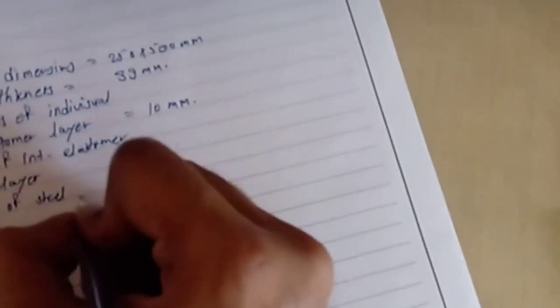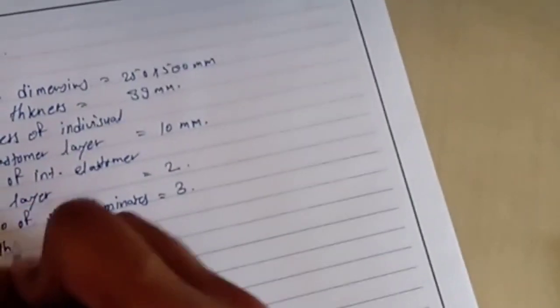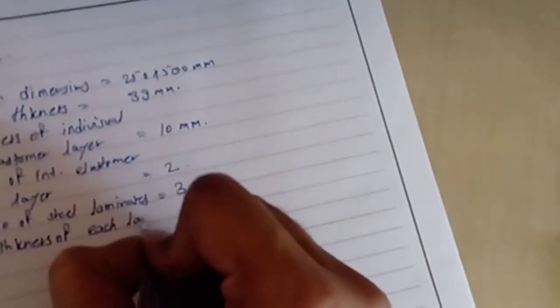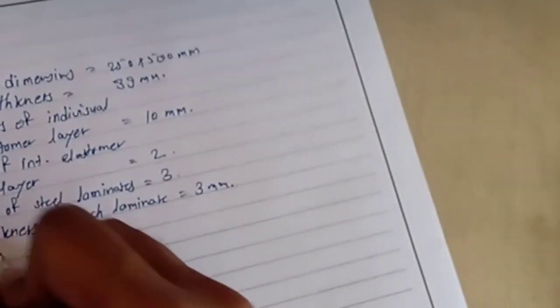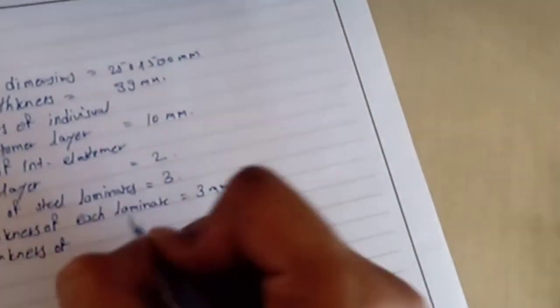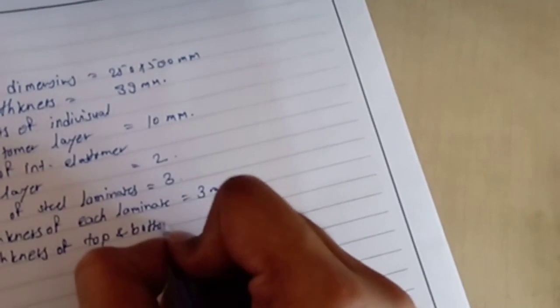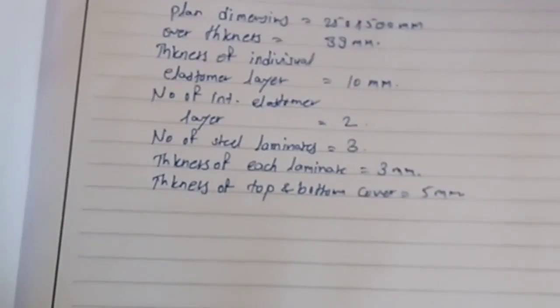Number of steel laminates: 3. Thickness of each laminate: 3 mm. And the thickness of top and bottom cover is 5 mm. So this way our design is complete.